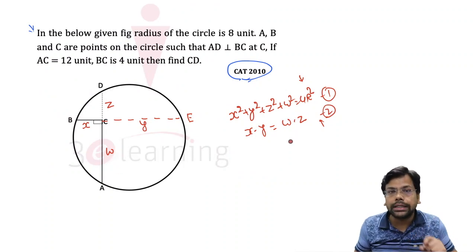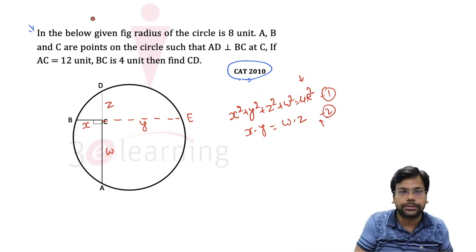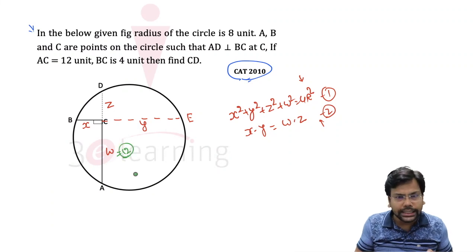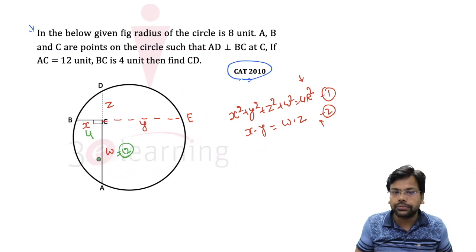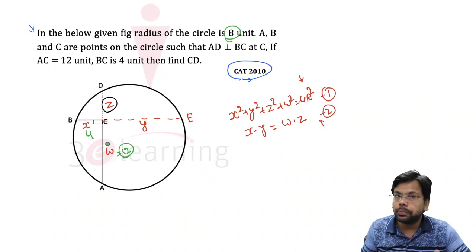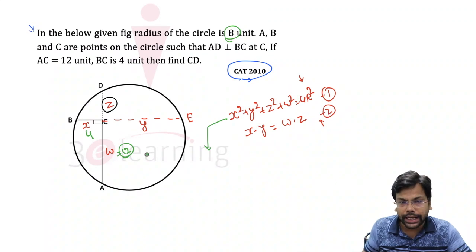First of all, what is given? AC is given as 12, and BC is 4 units, and the radius is 8. Now we have two equations and we just need to put the value of X and W and get the value of Z or Y.